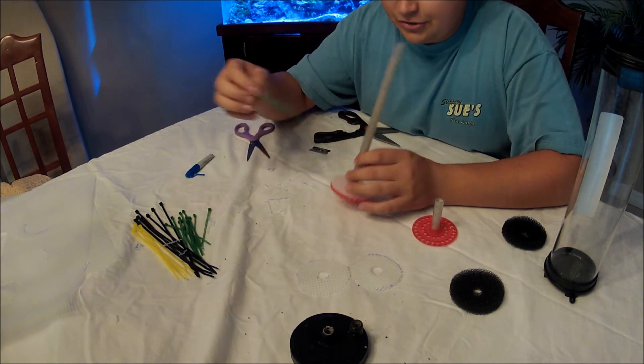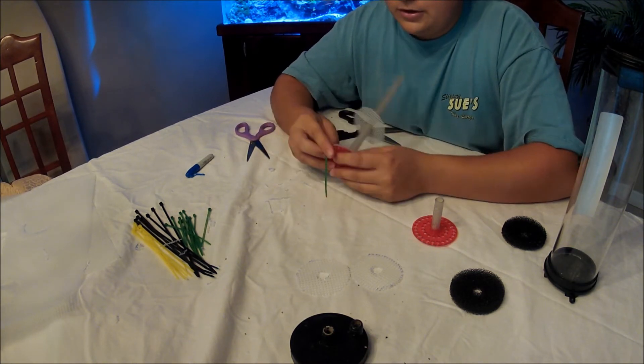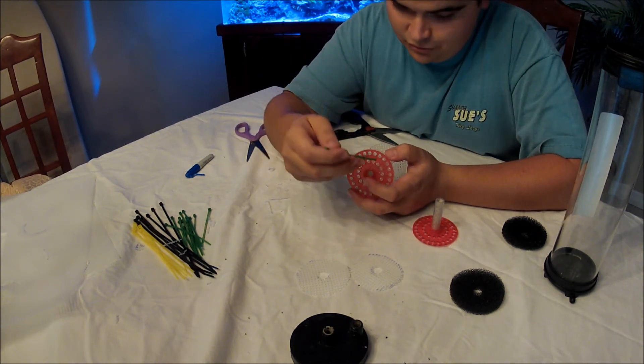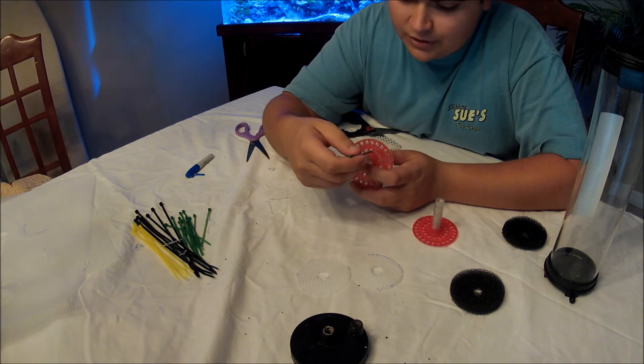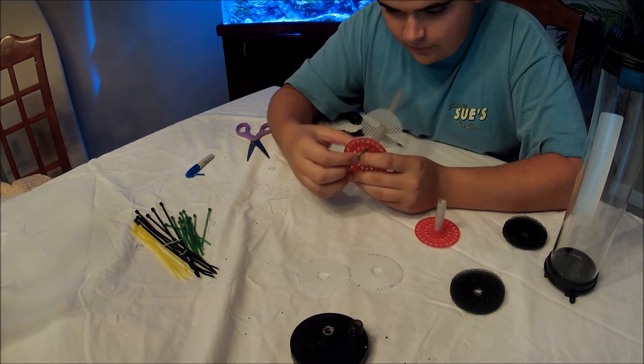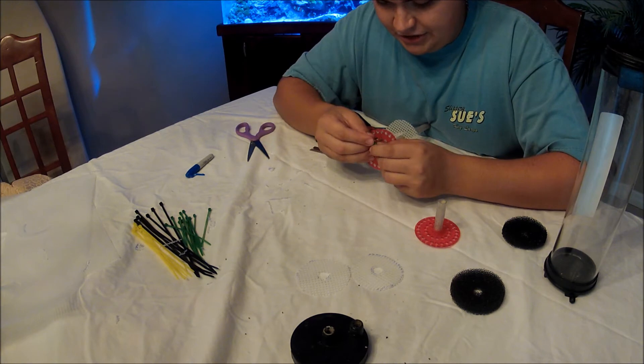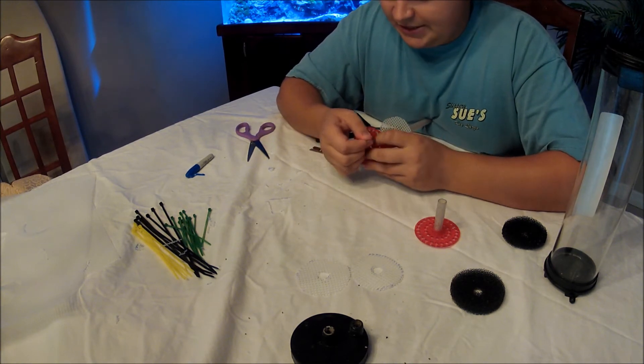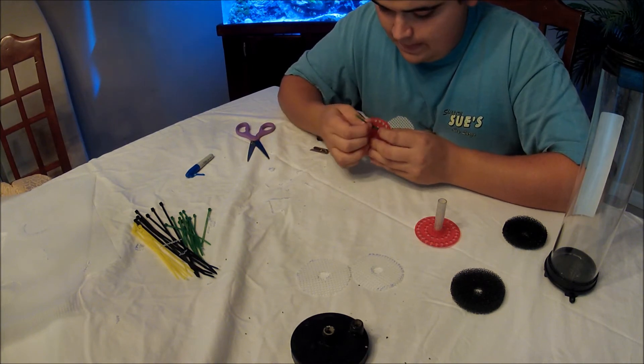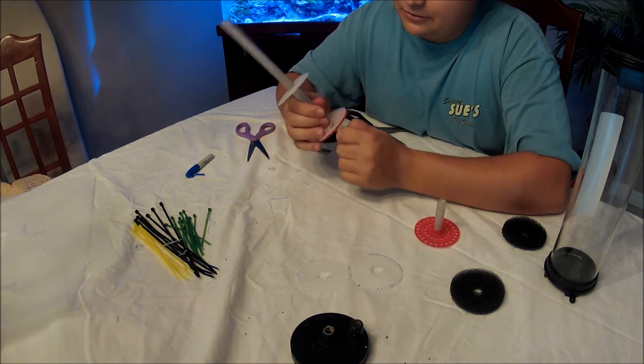Now, what you could do is you could grab a zip tie really quick. You can't put it on the outside one, because if not the reactor isn't going to work. It's not going to slide back into the tube. So what you're going to have to do is you're going to have to go through one of these, and then come back through again on one of these. I'm only doing this on the bottom, on one of the sheets, just because I want the layers to actually overlap each other. That way the holes are even smaller than what they are, because GFO is pretty small. I'm just kind of putting this down so it won't float up at all.